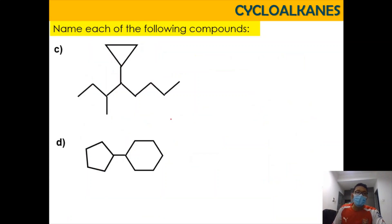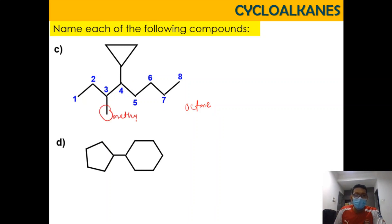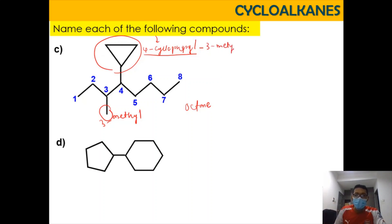For example C, the straight chain has 1-2-3-4-5-6-7-8 carbons, so the parent chain is octane. Carbon 4 is attached to a cyclopropyl group and carbon 3 is attached to a methyl group. Following alphabetical order (C before M), the name is 4-cyclopropyl-3-methyloctane.